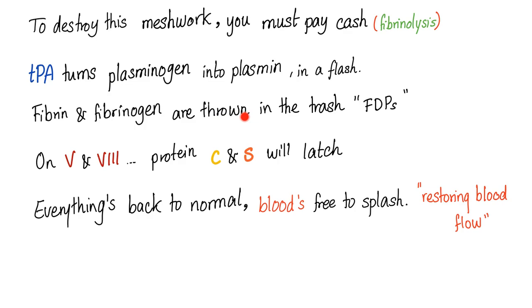Fibrin and fibrinogen are thrown in the trash. On factors 5 and 8, protein C and S will latch. Everything's back to normal, blood's free to splash, restoring the normal blood flow. Now let's go to the mnemonic.